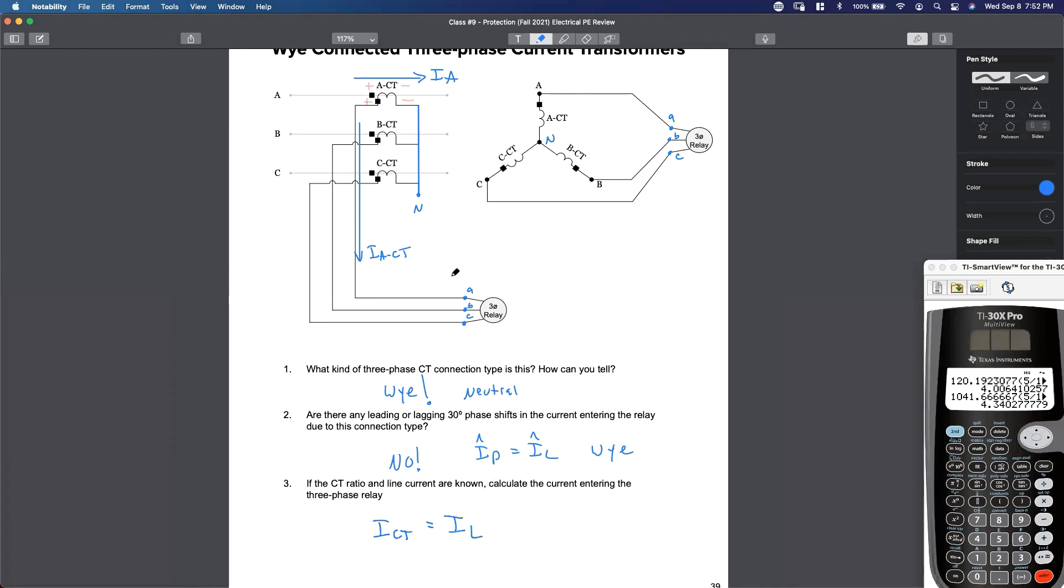I'm going to multiply my line current, right? Let's assume, I don't know, let's assume 905. I'm going to multiply IL by what? We're going to multiply IL to calculate the line current. 5 over 900. Yeah, you got it. 5 over 900. All we've done is what? We've stepped the magnitude down, right?